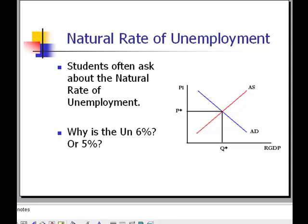Students often want to know what the natural rate of unemployment is — they want to know if it's like 5% or 6%, they want an exact number. When the economy is in equilibrium, the price level and the unemployment rate are not changing. Equilibrium refers to equilibrium in both the labor market and the goods market.